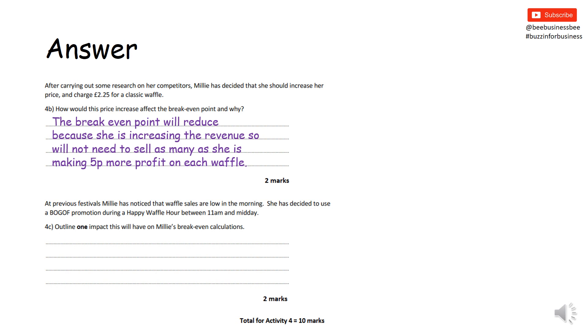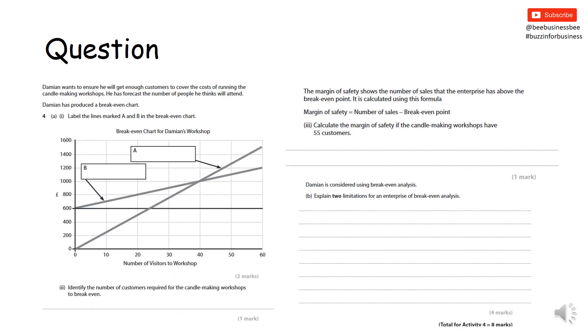This next question - remember Millie's giving away basically a free waffle. So that's a cost to the business. What's going to be the impact? Well, it's going to make the break-even inaccurate because think about this logically - it doesn't factor in the fact that you're giving a waffle away. So actually the break-even point is going to be higher than what she said it is because she's giving away a free waffle. It's going to cost the business even more money. That is the answer you're looking for. Again, what's happening and why. Pause the video again while you have a go at this question and then unpause to look at the answers.